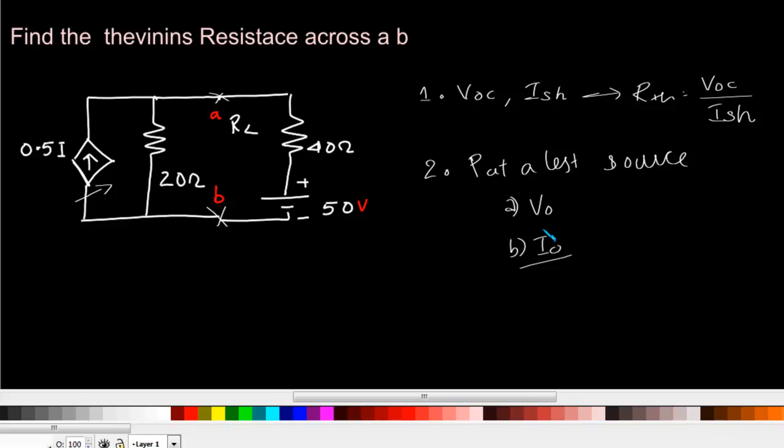In this case, we have a dependent source and it says that if I current flows here, then 0.5 times I, or half the current that is flowing in this branch, will flow from here.